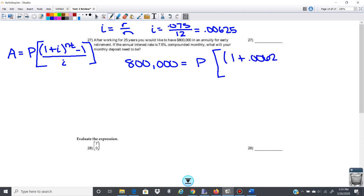0.00625 to the n is 12 times a year for 25 years. We have 25 years here, minus 1 over 0.00625, or i.